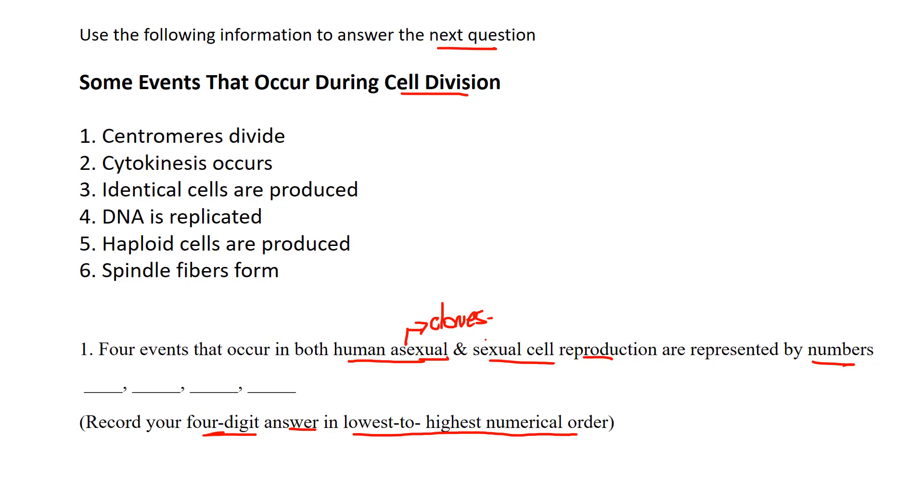And we know this whole process is mitosis for humans. For bacteria it's different things like binary fission or spores, but for humans, mitosis is our form of asexual reproduction. Form of sexual, of course, is meiosis, how we produce our sex cells. So that's essentially what they're asking here. They want four events that happen in both asexual and sexual reproduction.